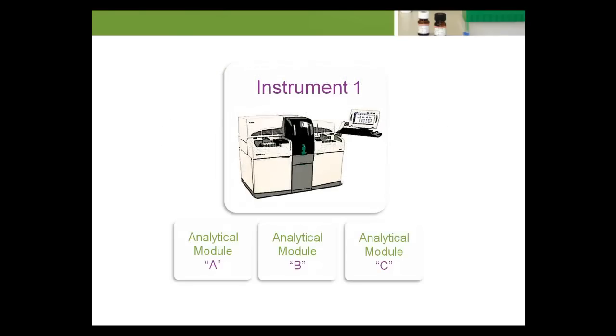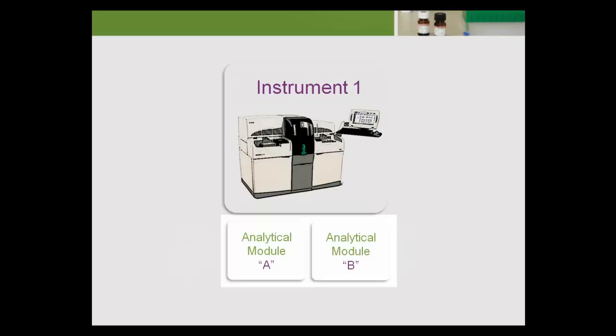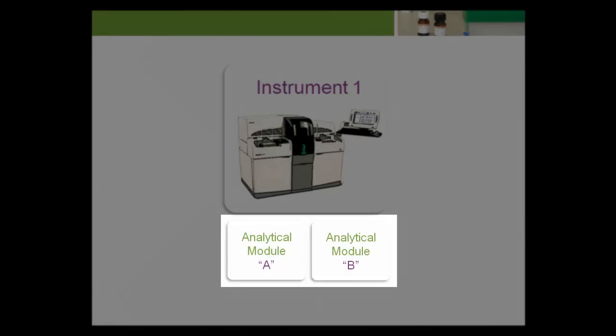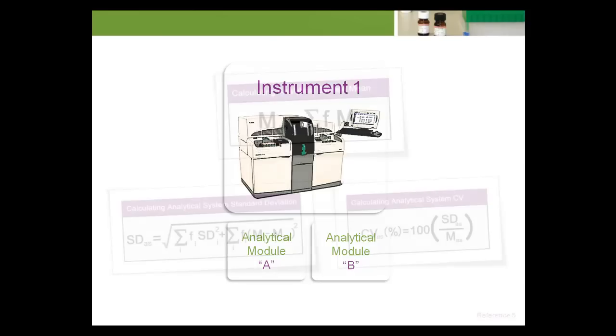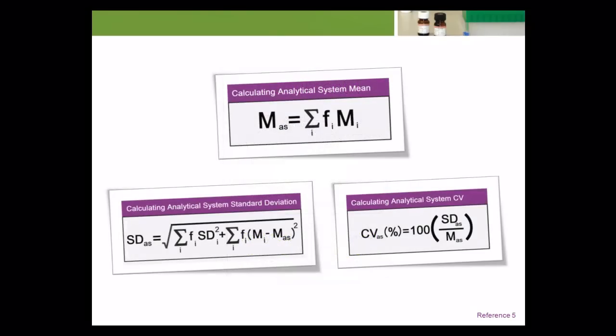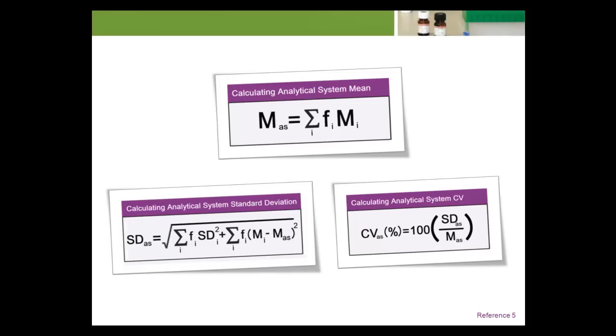Each analytical module has its own characteristic imprecision. Additionally, there may be bias between analytical modules. The total imprecision uncertainty of the analytical system will be a function of the imprecision of the individual modules and the bias between them. These are the formulas for the total uncertainty of the system.